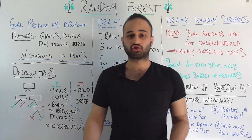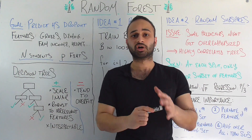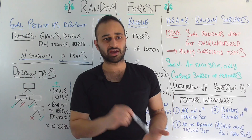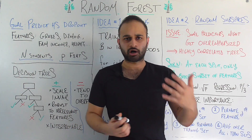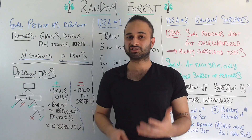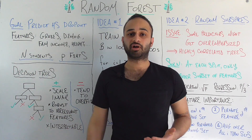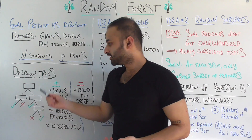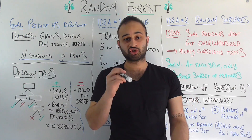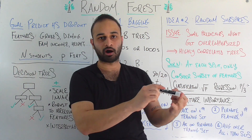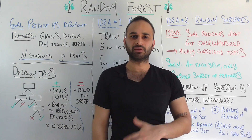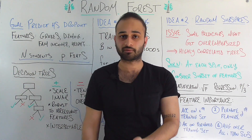I think the biggest pro of decision trees is their interpretability. There are some machine learning models like SVMs or neural networks that are really difficult to explain to someone who's never studied statistics before. Compare that with a decision tree — you can basically just show them the output from your computer and say that I made the decision about whether the student's going to drop out by just following this decision path. That's a very natural way people think about things. Basically it's a flow chart.